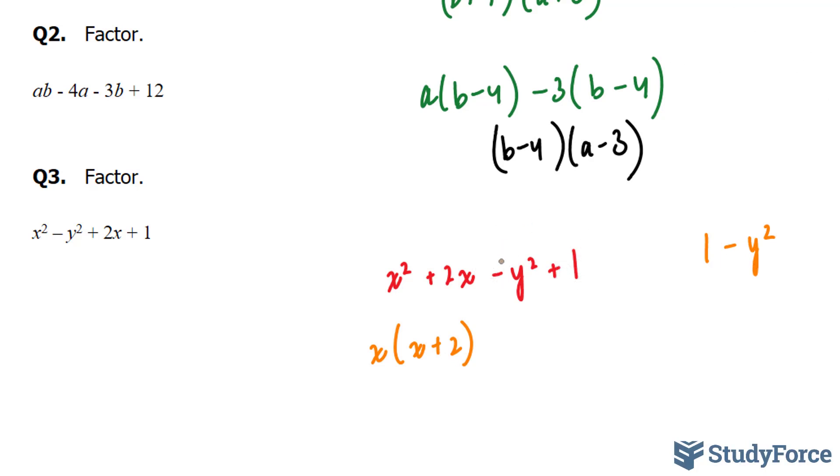What we have is 1 minus y squared. Technically, I mean, if I move this over and this one over, I have 1 minus y squared.